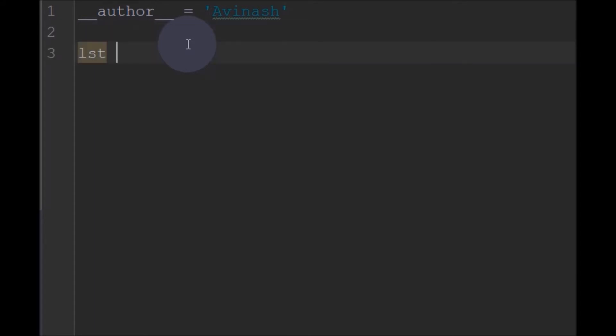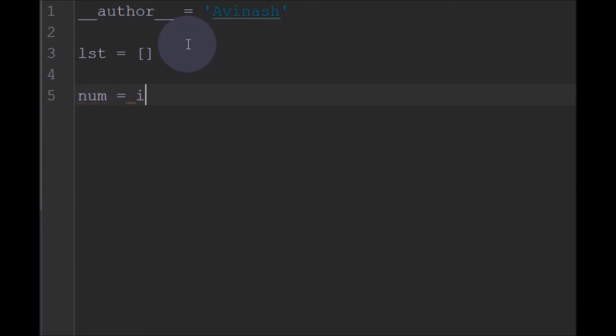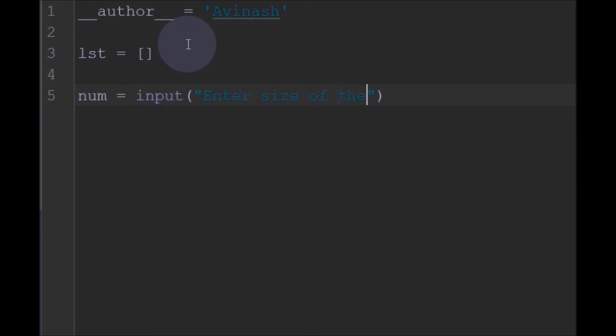First, I will initialize an empty list so that I will ask the user to enter the size of the list and also ask the user to enter the elements in the list. So I initialize an empty list. So I will ask the user to enter the size of the list. I will prompt 'enter size of the list'. So after that I need to cast this to integer. So after entering the size of the list, I need to run a for loop with this size.